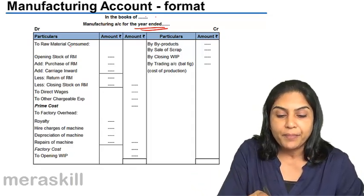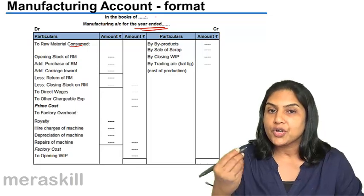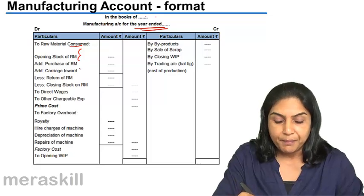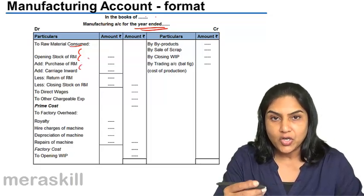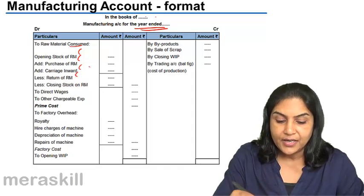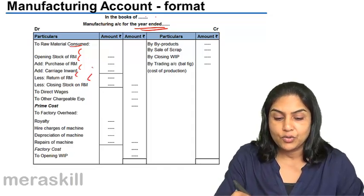It starts with the raw material consumed. What is the raw material consumed? Opening stock plus what purchased plus carriage inward. All costs in bringing the goods in, less return, less closing stock.